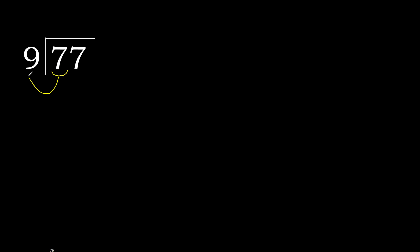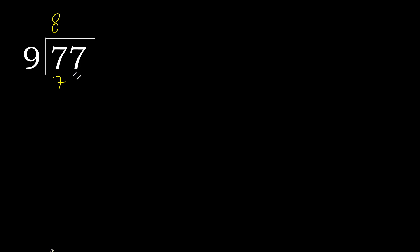77 divided by 9. 7 is less, therefore next. 77 is not less, therefore with 77. 9 multiplied by which number is nearest to 77 but not greater? 9 multiplied by 9 is greater, so multiplied by 8. 72 is not greater, ok. Subtract — the remainder is 5.